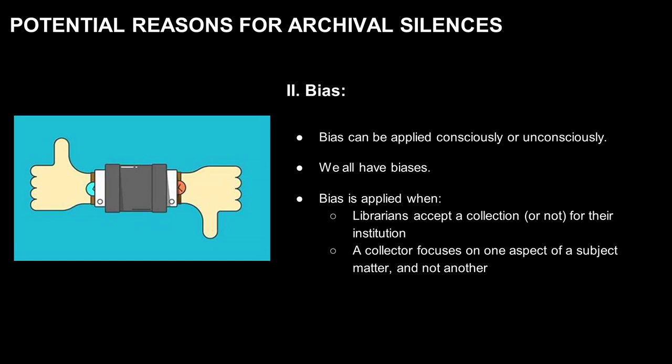But privilege is only one possible reason that helps to create archival silences. Another factor is bias. We have to acknowledge that we all have biases, both conscious and unconscious. So when librarians or curators decide to acquire or accept one collection but not another, we are subconsciously applying our own biases to some degree. That collector also applied their biases in the selection of materials they added to their collection. One example is USC starting a collection of the Los Angeles Women's March in 2016. While there were other historic moments in Los Angeles history at that time, librarians and USC Library Special Collections decided to document the LA Women's March, applying their own bias in the decision making.